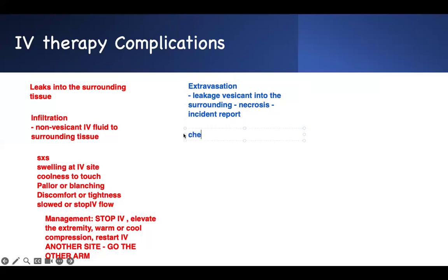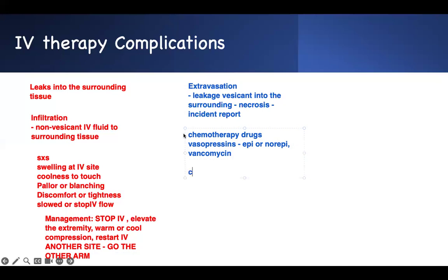What is a vesicant? The most common ones we use are chemotherapy drugs — these are all vesicants. We can also use vasopressors like vasopressin, epinephrine, or norepinephrine — these are all vesicants. Vancomycin is also a vesicant. Chemotherapy drugs like doxorubicin and vincristine are all vesicants. Common ones you may see are calcium or potassium — potassium can infiltrate, and when it infiltrates, it can cause extravasation.